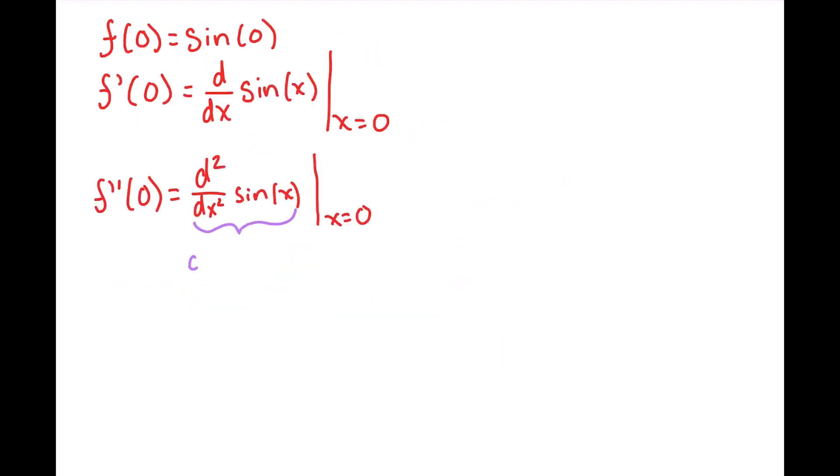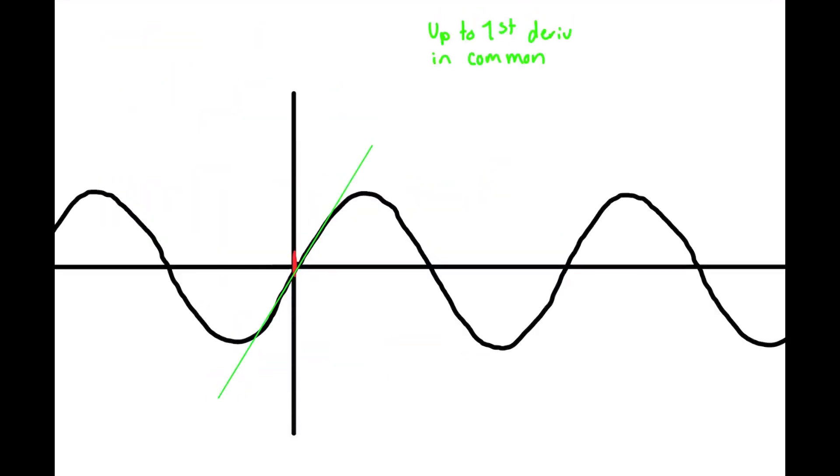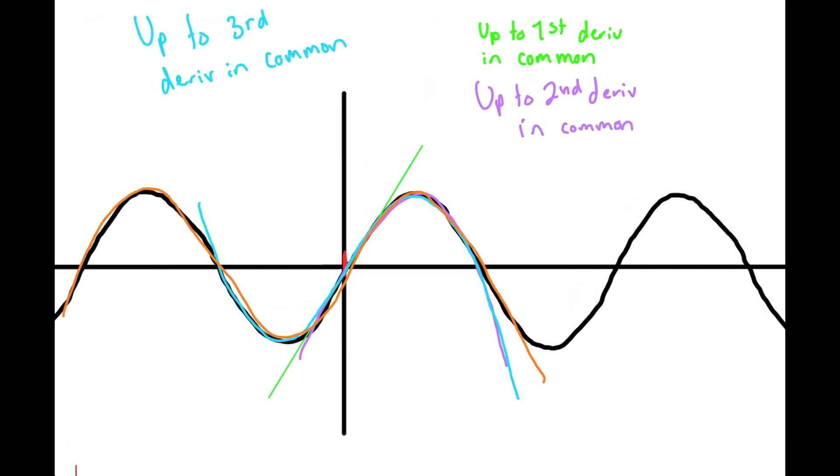But the second derivative is changing, and that's dictated by the third derivative, and the third derivative is changing, and that's dictated by the fourth derivative. Basically, this pattern continues. The more derivatives of our approximator function we set equal to derivatives of the sine curve, the more we'll trace over the sine curve.